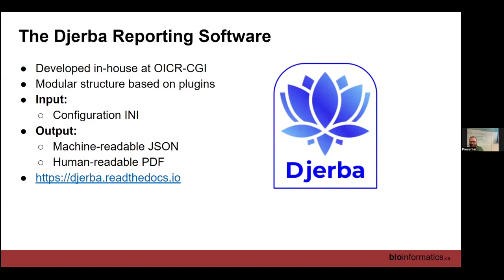The Jirba reporting software is named after an island — in our group, instead of food or gods, we have islands. It's an island off the coast of North Africa; the initial D is silent. It has a modular structure based on plugins. All of our assays are rapidly advancing and changing — we're adding new metrics and swapping out software tools. For example, we changed Sequenza for Purple for our CNV estimation. In Jirba, that was just a matter of replacing a plugin, which is much easier than having spaghetti-tangled interconnected software where changing one thing means changing 30 others. Jirba is designed to be modular and easily upgradable.